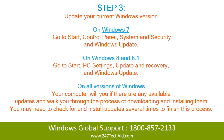go to Start, PC Settings, Update and Recovery, and Windows Update. On all versions of Windows, your computer will tell you if there are any available updates and walk you through the process of downloading and installing them. You may need to check for and install updates several times to finish this process.